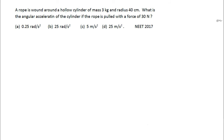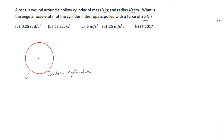A rope is wound around a hollow cylinder of mass 3 kg and radius 40 cm. What is the angular acceleration of the cylinder if the rope is pulled with a force of 30 N? This question came in NEET 2017. Pretty easy question. Let us consider this hollow cylinder with its center O.